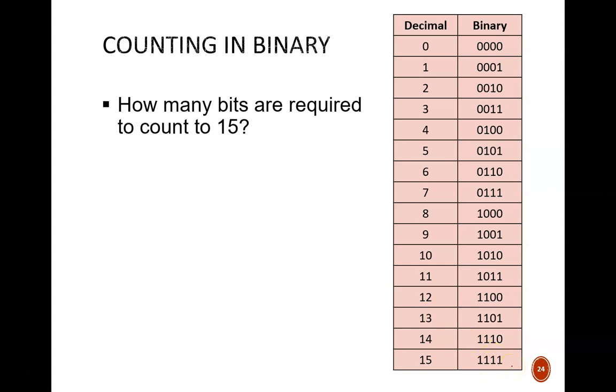It's clear from the table that we need at least 4 bits. We certainly could use more bits than that, but those extra bits would just be leading 0s. How many bits are required to count to 16? Well, 15 is the absolute max number we can reach with 4 bits, so we would need a fifth bit to express 16. In fact, 16 would be written in binary as 1, 0, 0, 0, 0.